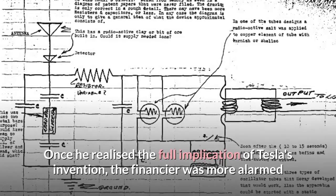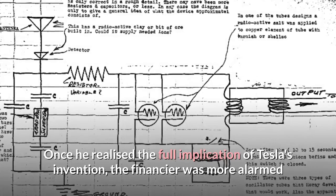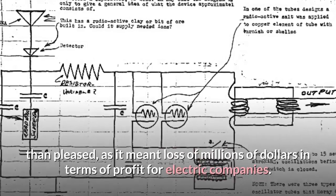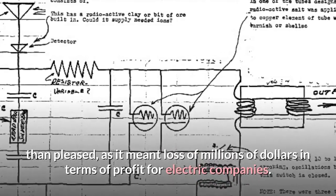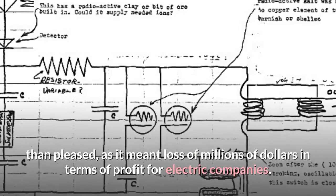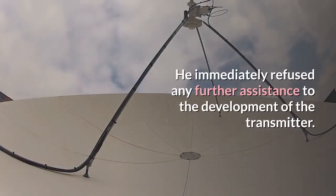Once he realized the full implication of Tesla's invention, the financier was more alarmed than pleased, as it meant loss of millions of dollars in terms of profit for electric companies. He immediately refused any further assistance to the development of the transmitter.